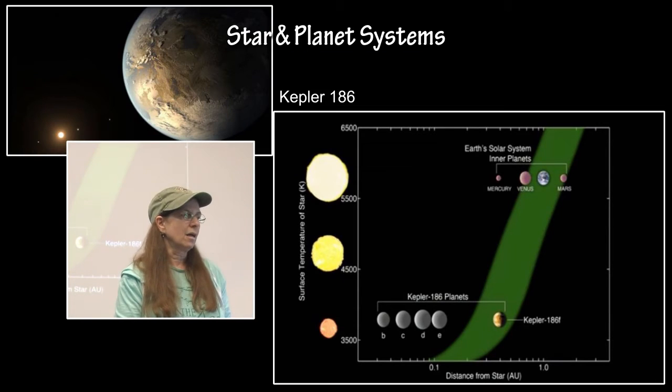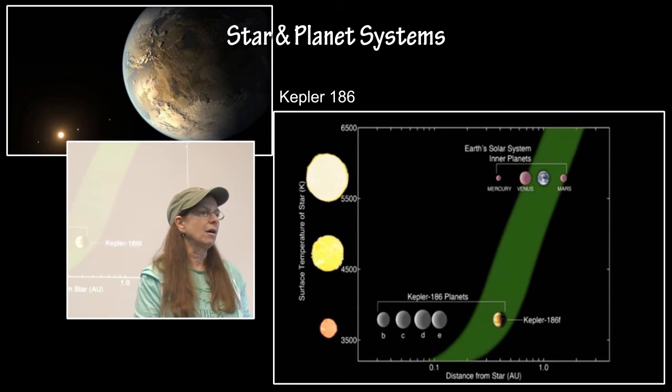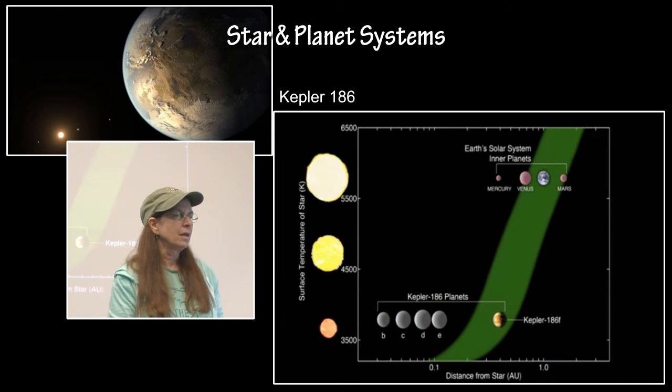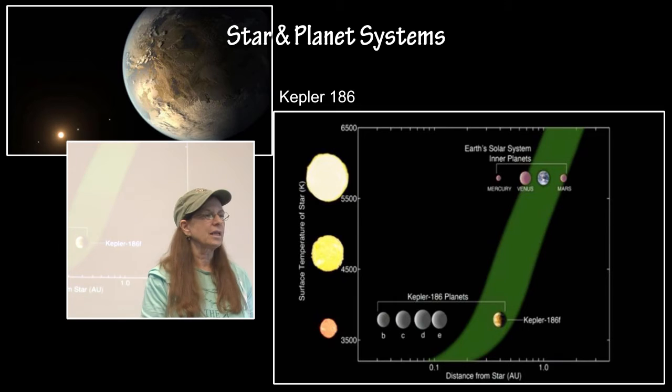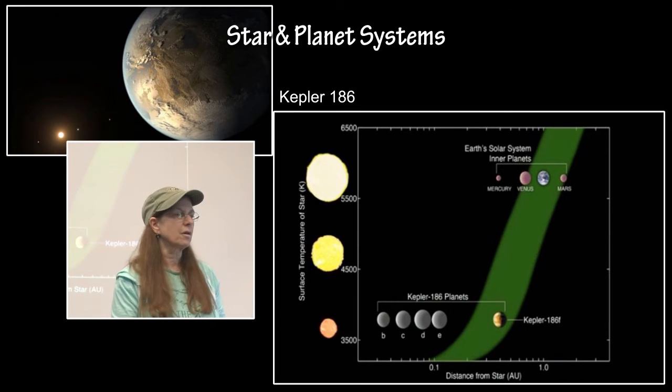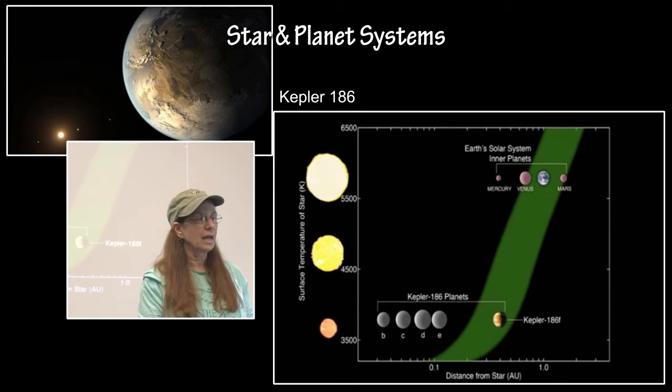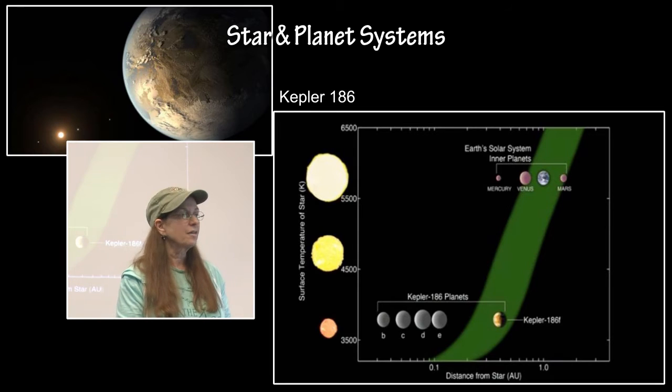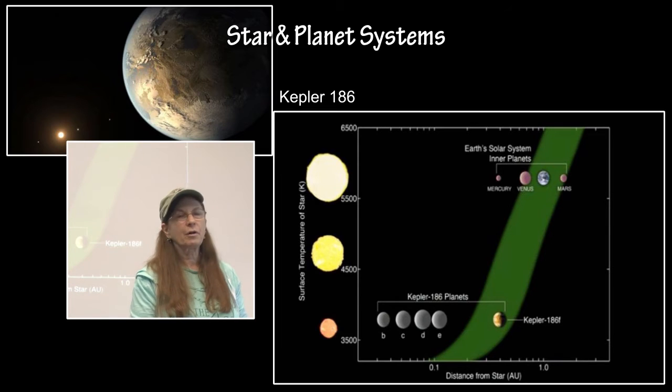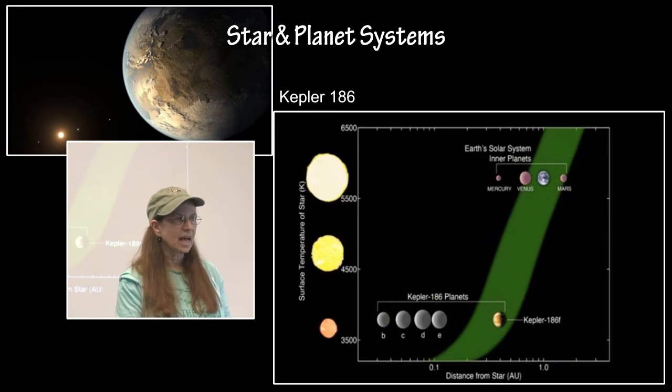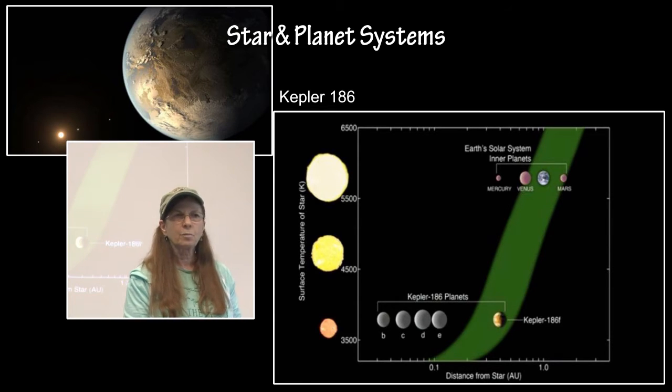Kepler-186 is a five planet star system, about 500 light years away. Kepler-186 is a red dwarf star, and it has five planets. But one of the planets, Kepler-186f, is actually the very first validated Earth-sized exoplanet that is orbiting within the habitable zone of its star.